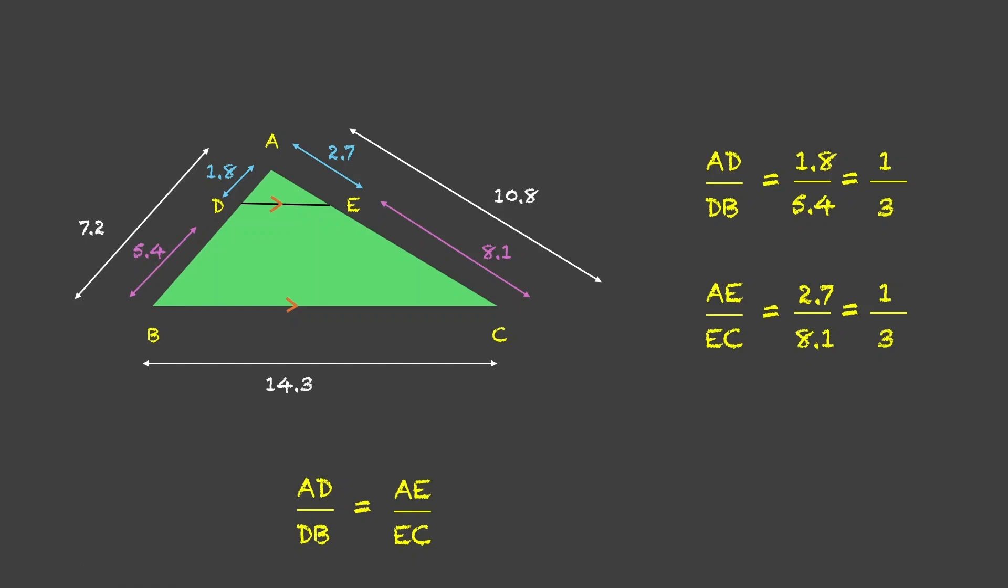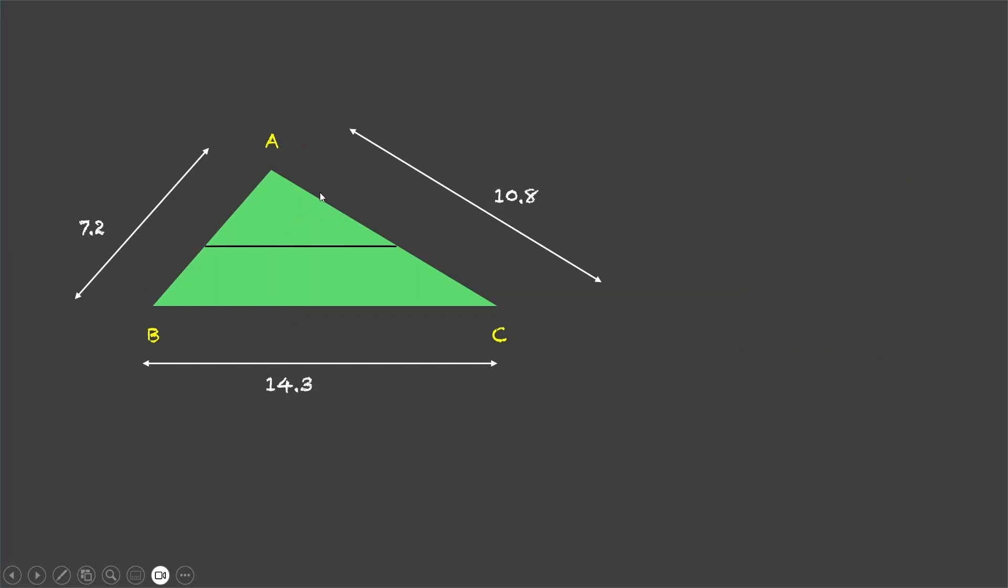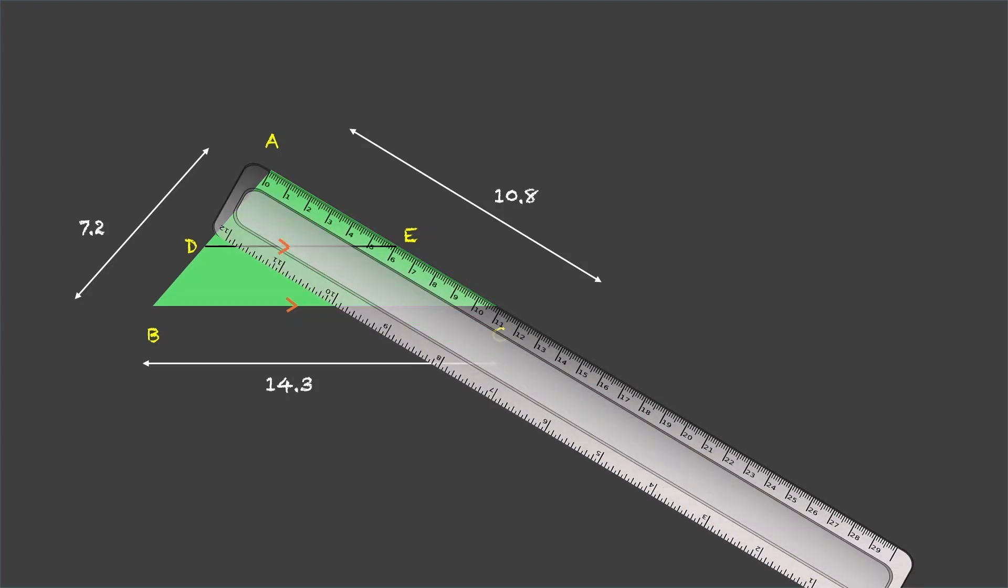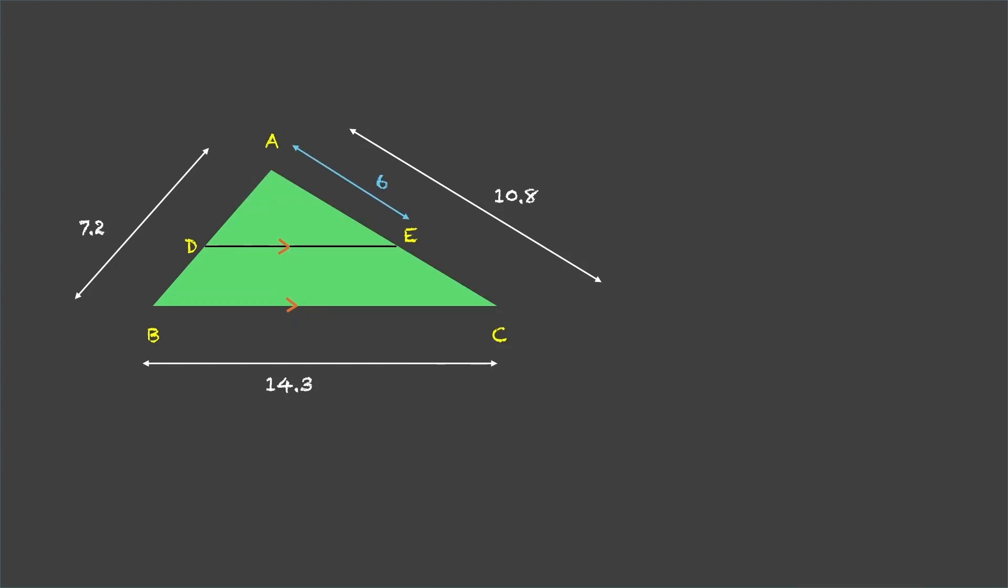Let us move further and continue with our experiment. Let us draw this DE somewhere else. Let us just pull it down a little bit and draw it over here now. Again, DE is parallel to BC. Let us again measure AE to 6. That means EC is 4.8. AD is 4. So, remaining DB is 3.2.